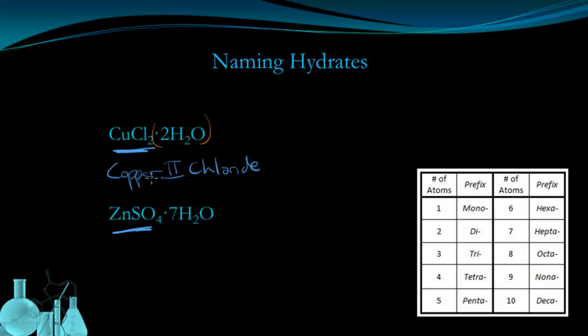It does not mean we multiply copper 2 chloride by two waters. This dot really translates to contains. It tells you how many water molecules are contained for each formula unit of copper 2 chloride. So how do we name this component? Well, we can agree that H2O is water. And the 2 tells us that we should use the prefix di.